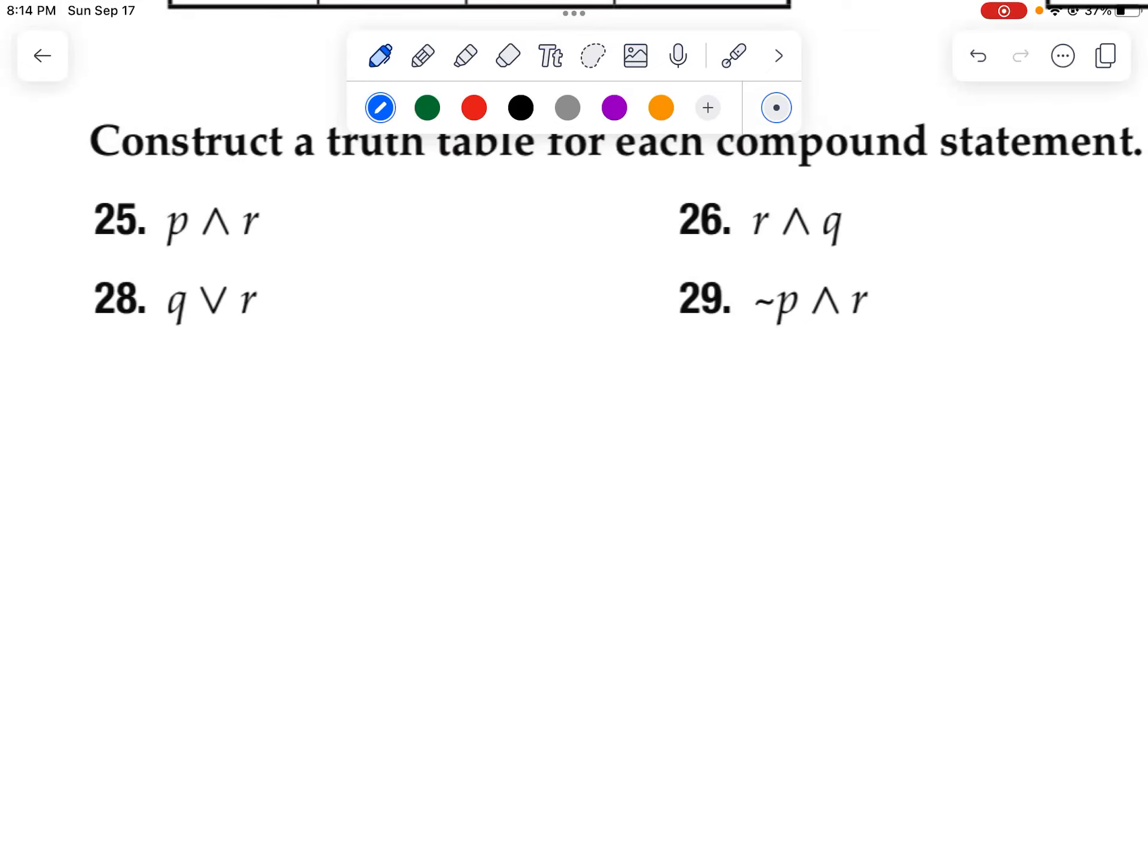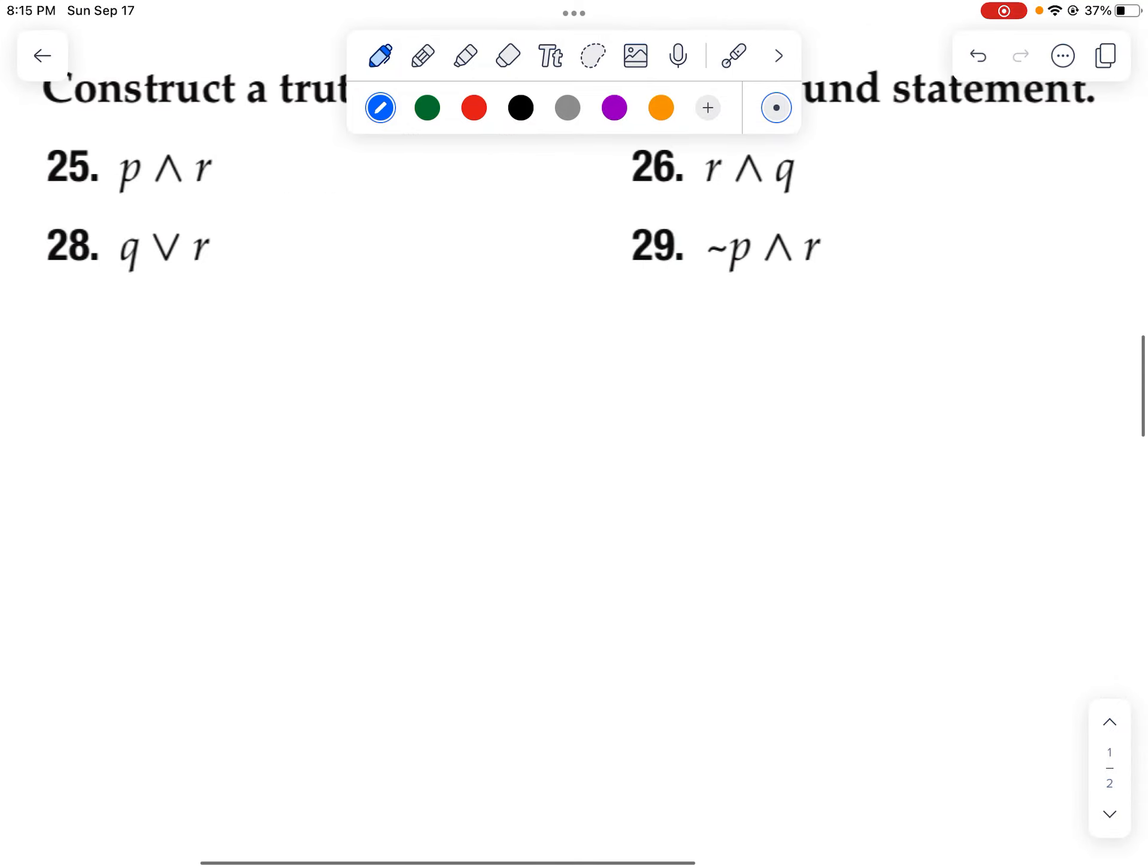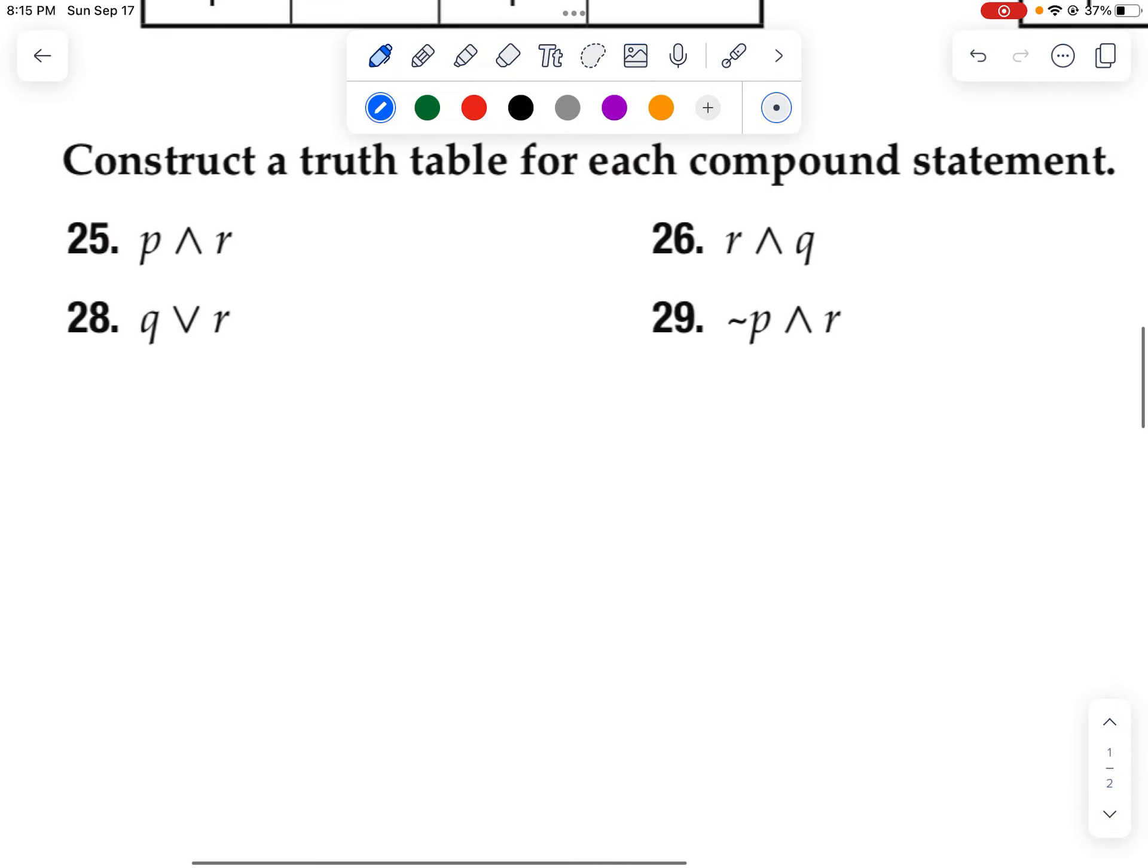Hi, welcome to an introduction to setting up a truth table. Notice how there's no truth value for P, R, Q, or there's no S here, but usually you'd see S as well.